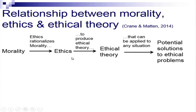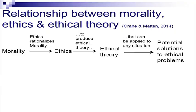The relationship between morality, ethics, and ethical theory: ethics rationalizes morality and helps us understand the reasons why something is right or wrong, why the society considers something as right or wrong. Ethics rationalizes morality to produce ethical theory that can be applied to given situations, and that in turn translates into rules and laws which can generate potential solutions to ethical problems.